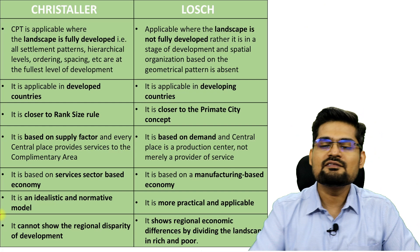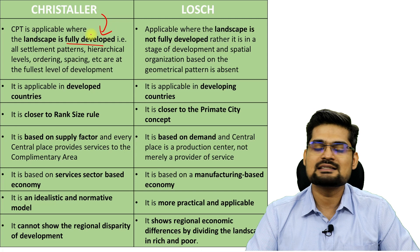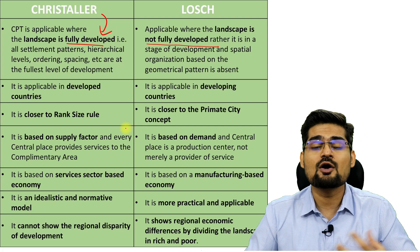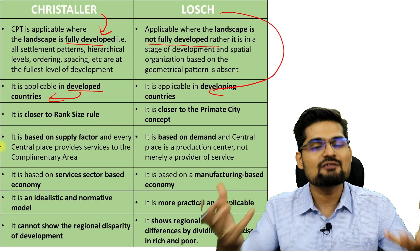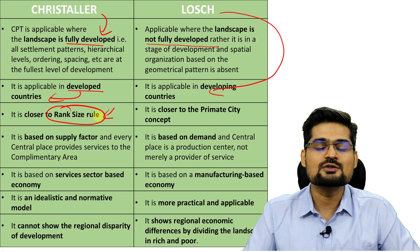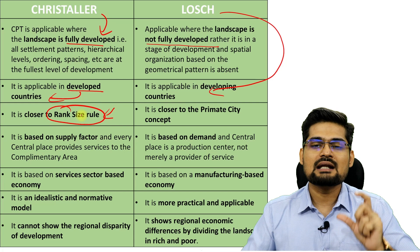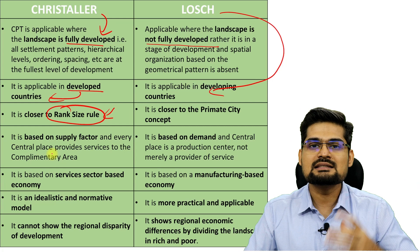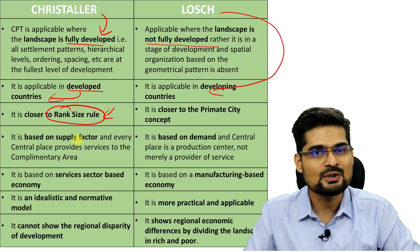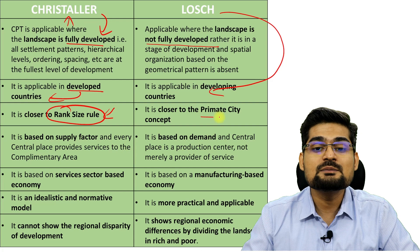The difference between Christaller and Lösch is clear. In Christaller's central place theory, the landscape is fully developed, while in the Löschian model the landscape is still developing — a complex pattern. Christaller's model fits developed countries, while Lösch's model fits developing countries still emerging. Christaller's model follows urban hierarchy while Lösch's model follows the primate city concept — one big center with many very small centers around it.